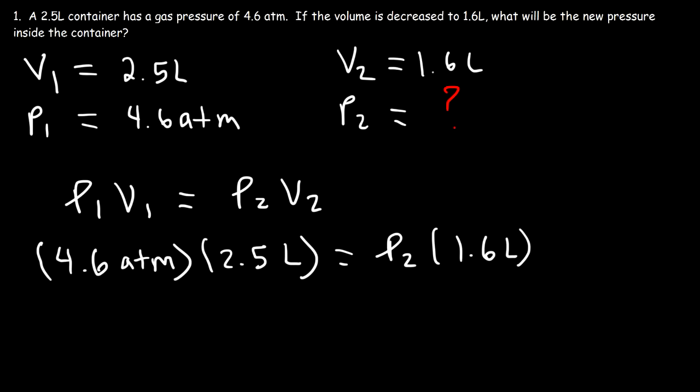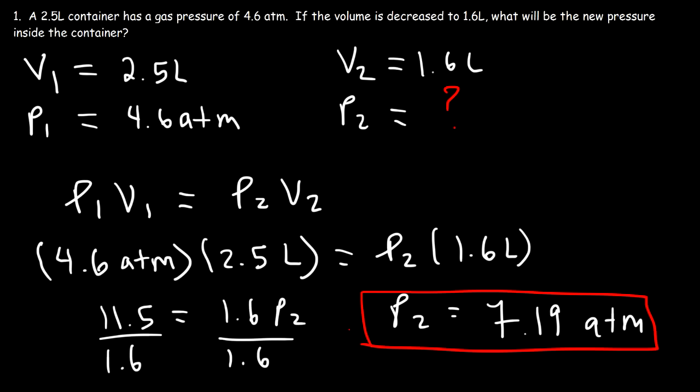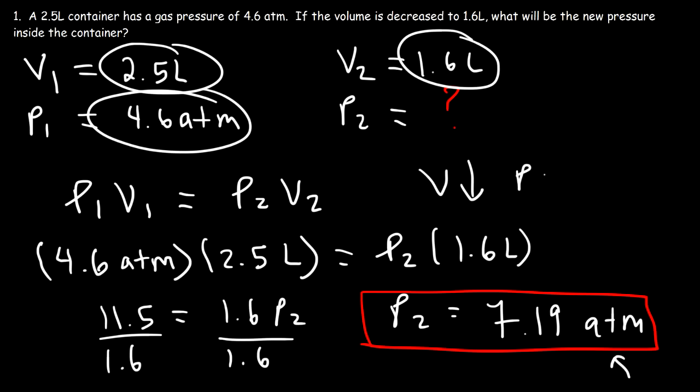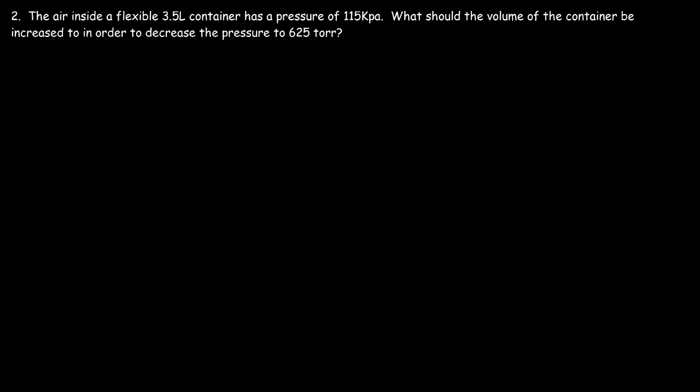So 4.6 times 2.5, that's 11.5, and that's equal to 1.6 times P2. So now to solve for P2, we've got to divide both sides by 1.6. So P2 is 11.5 divided by 1.6, and so that's about 7.19 atm. So as we can see, in line with Boyle's Law, you should always check to make sure that this answer makes sense. We decrease the volume from 2.5 to 1.6. So therefore, the pressure should increase from 4.6 to 7.19.